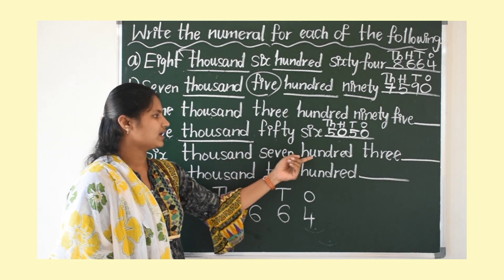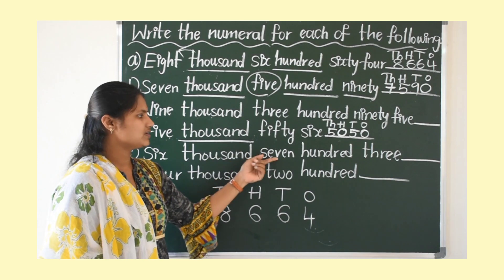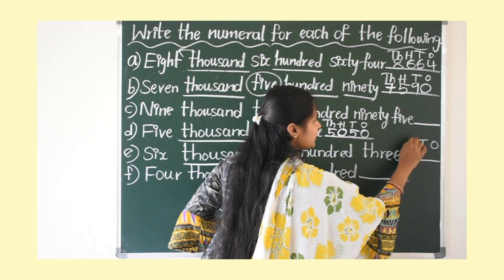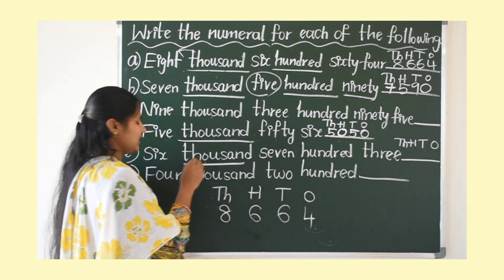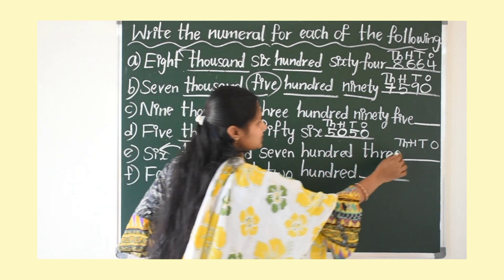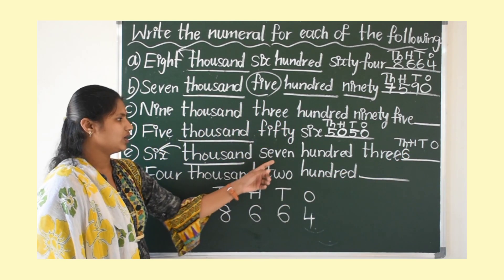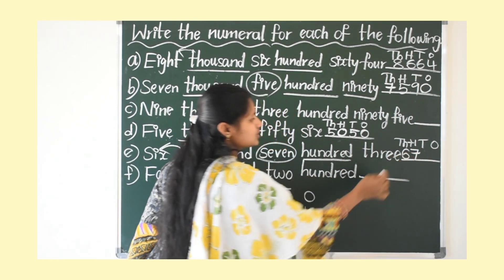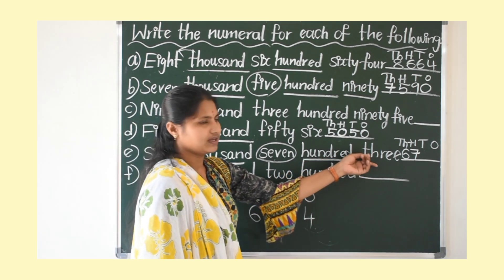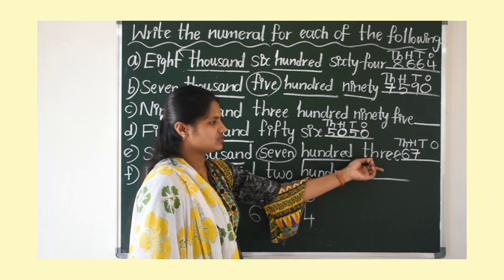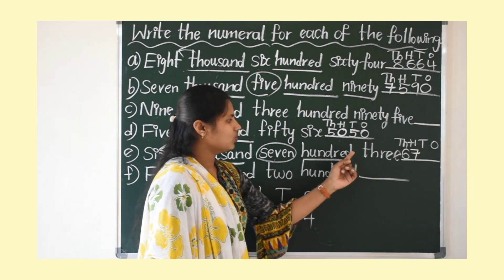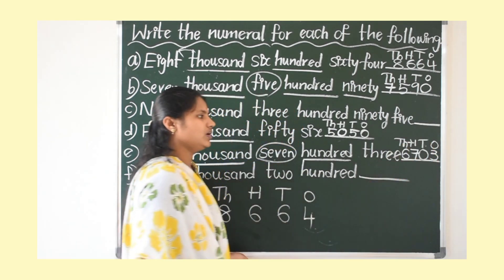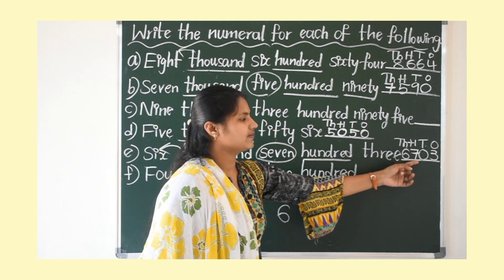Next: six thousand seven hundred and three. Started with 1000, so write down place values up to 1000's: 1's, 10's, 100's, and 1000's. How many 1000's? 6000 — write 6. How many 100's? 7 hundreds — write 7. Next is 3: we have only 1's, so there are no 10's. Write 0 in the 10's place and 3 in the 1's place. Answer: 6703.